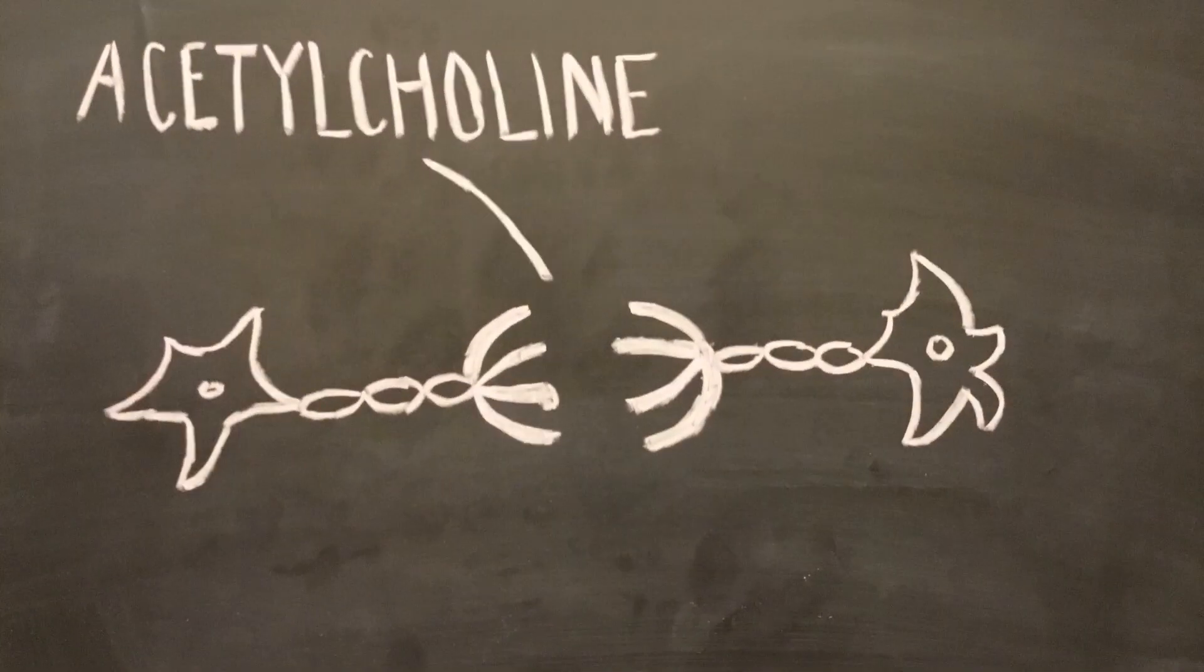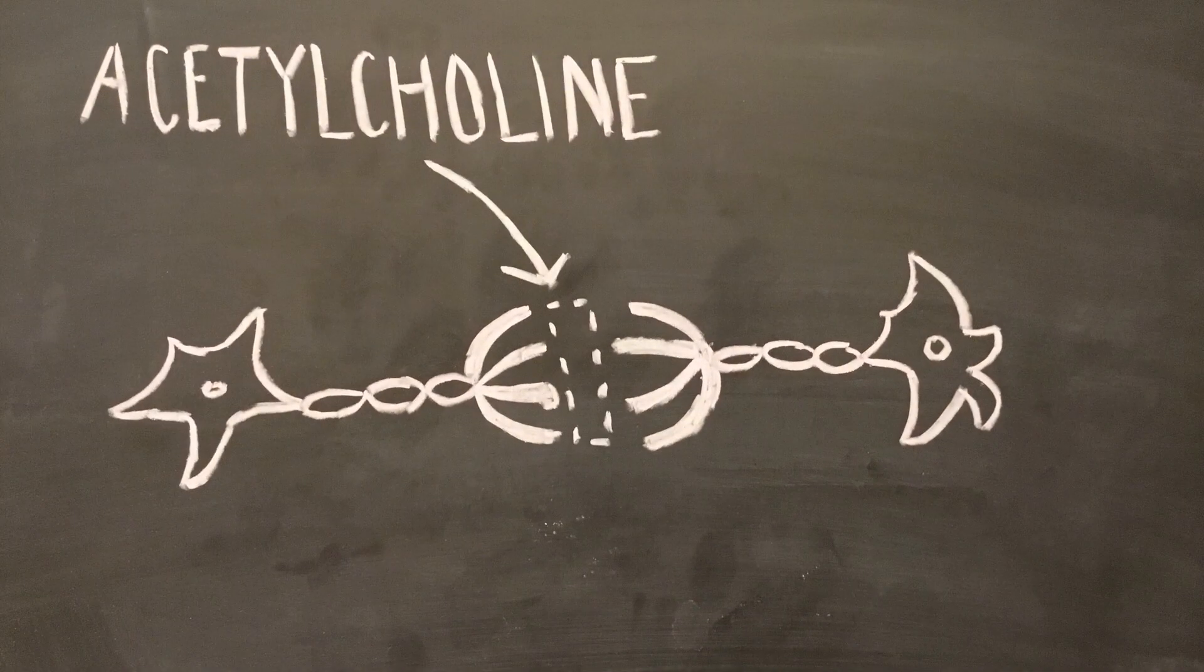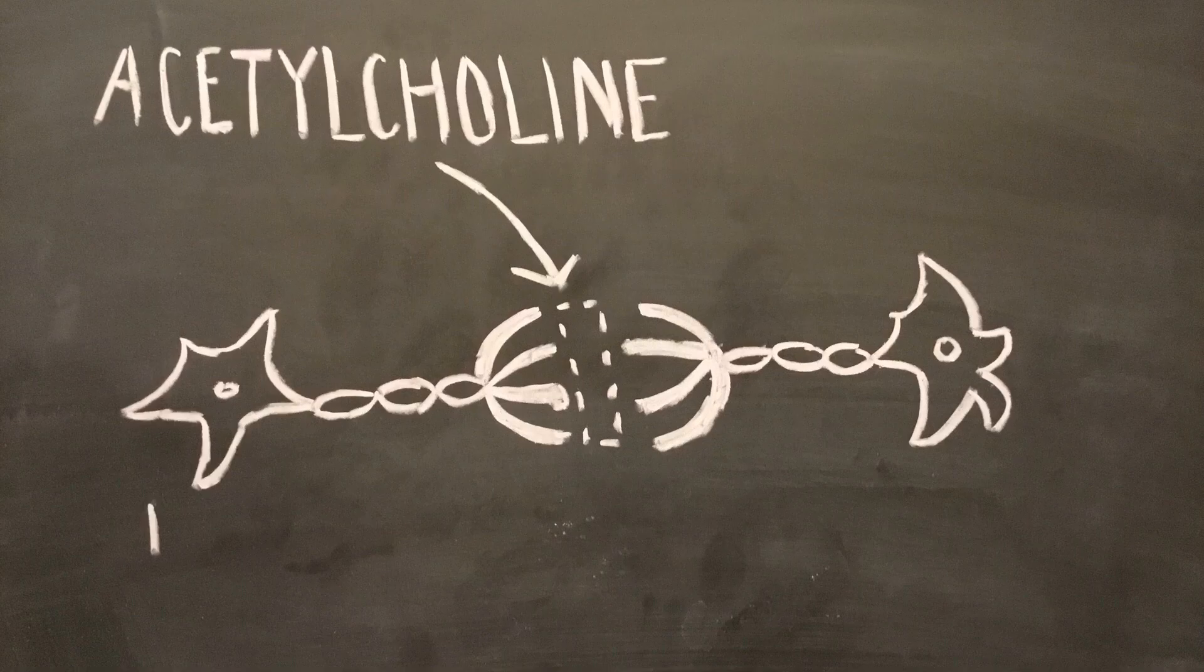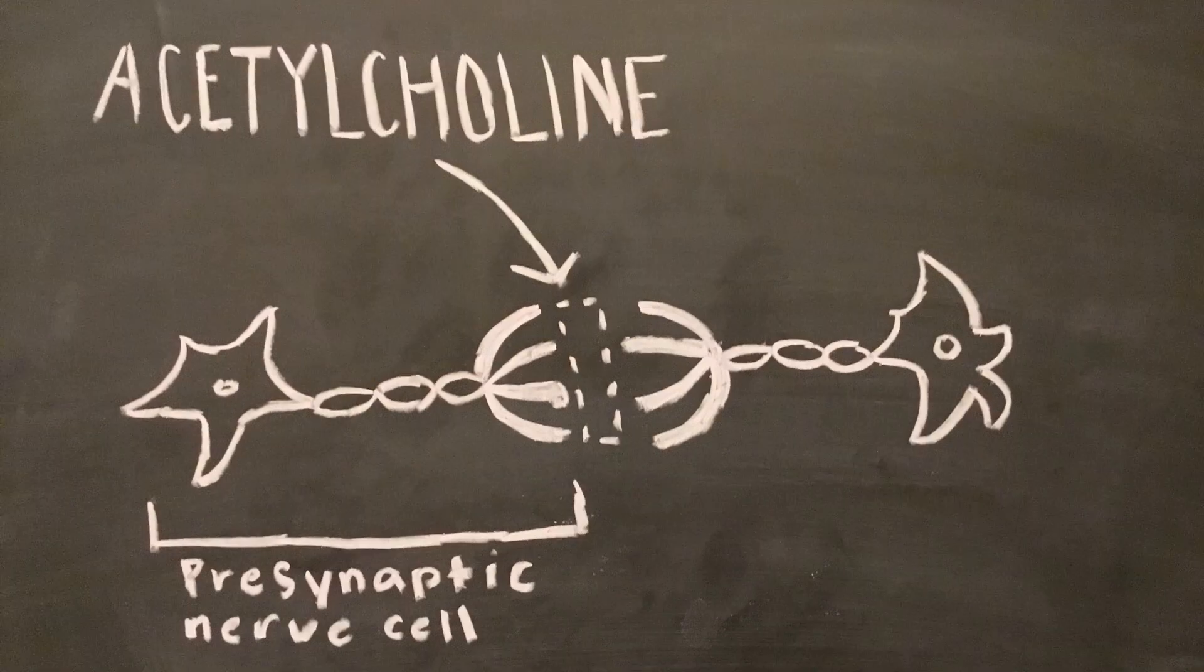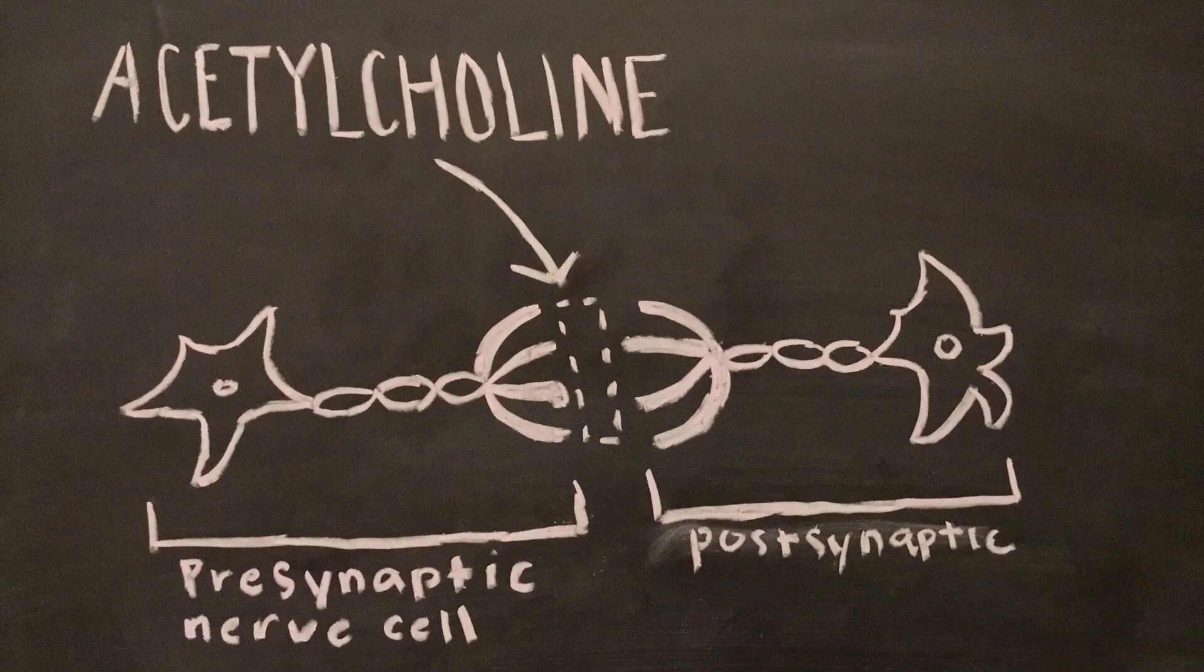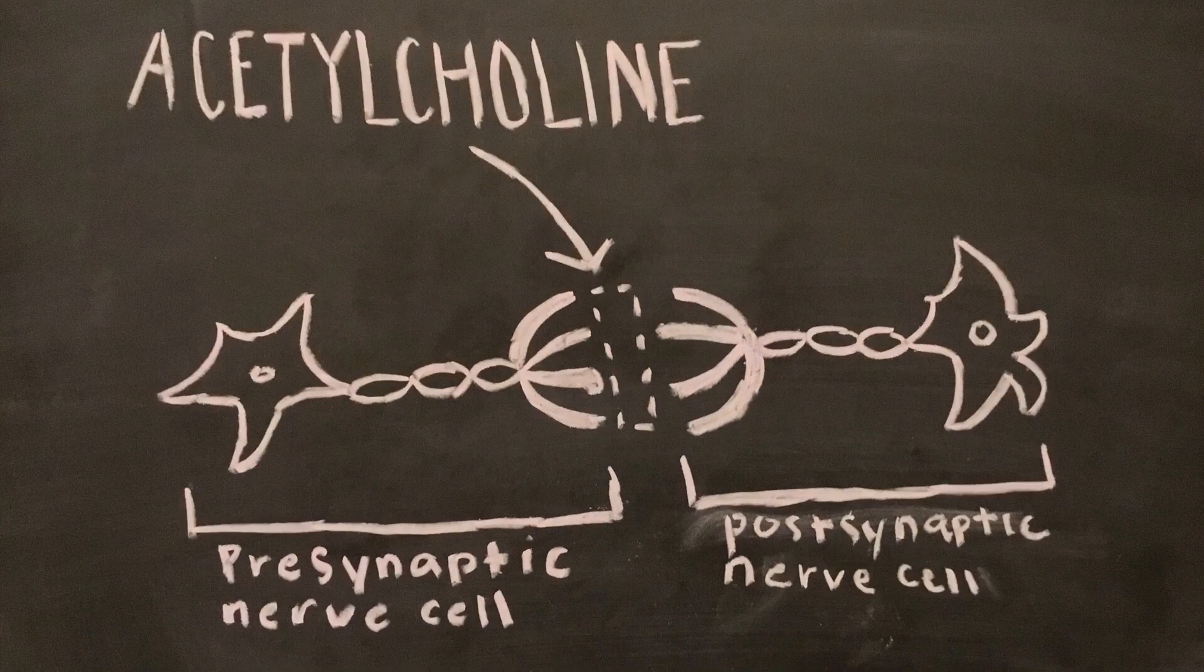When released from the pre-synaptic neuron, the neuron that releases acetylcholine, it becomes a bridge responsible for pushing messages along or blocking them from reaching the post-synaptic neuron. It is typically associated with muscle activity, learning, and our short-term or working memory.